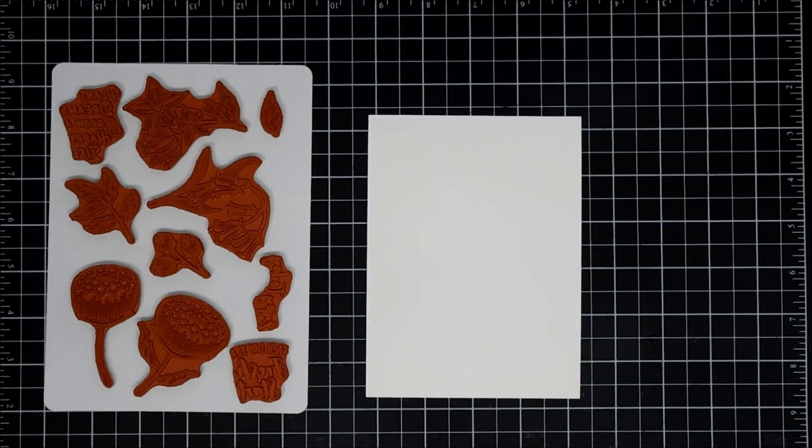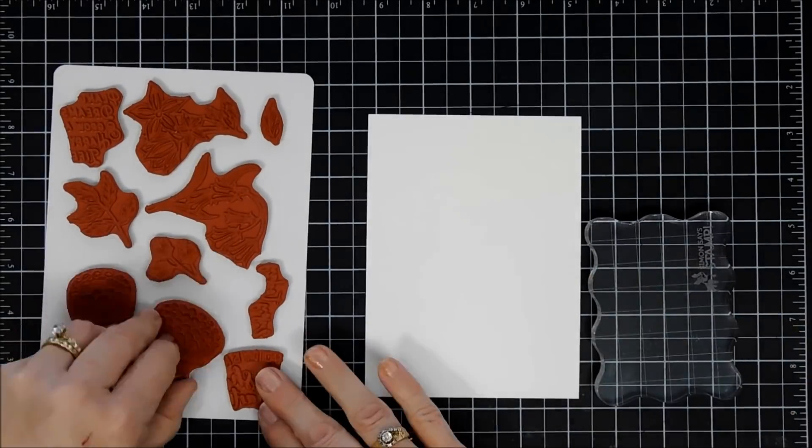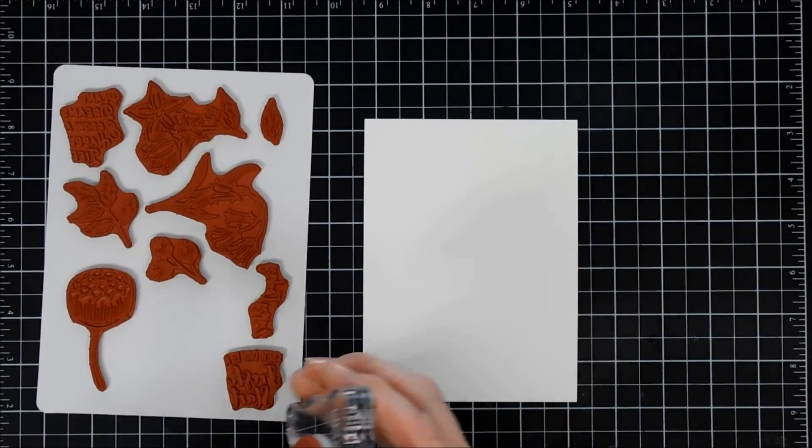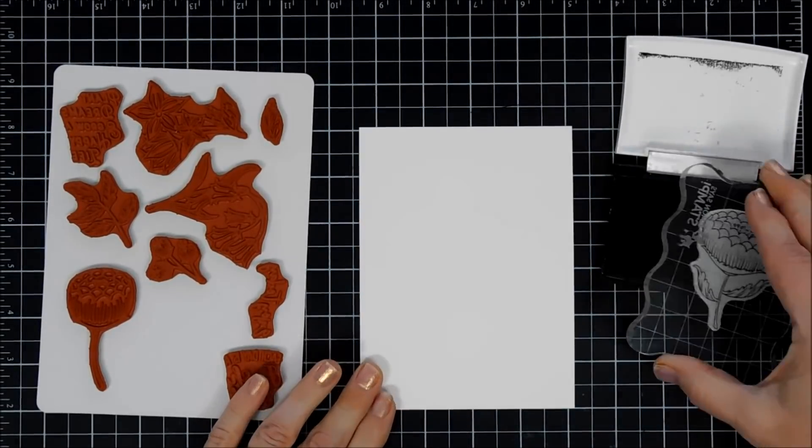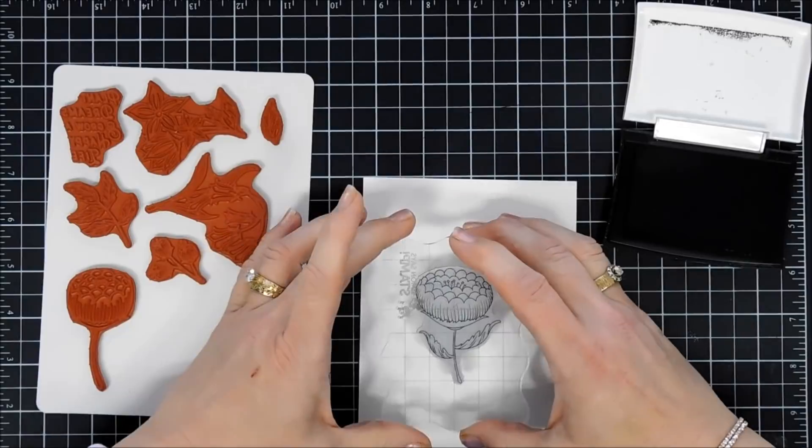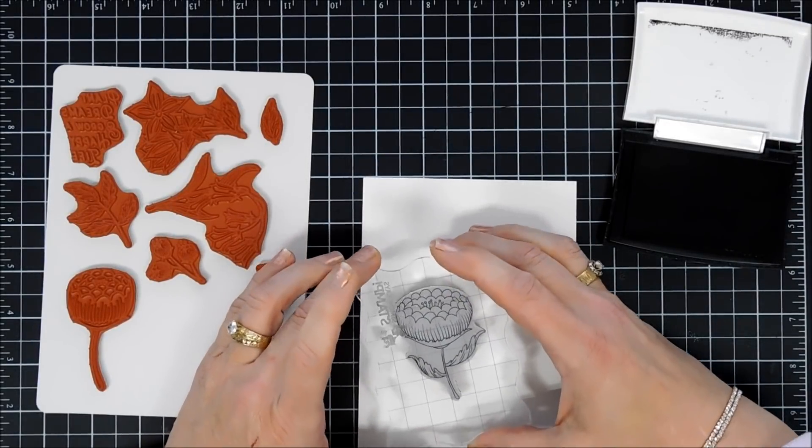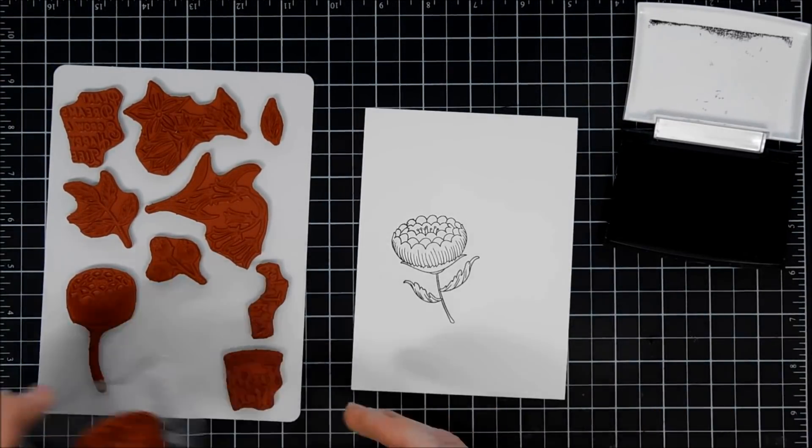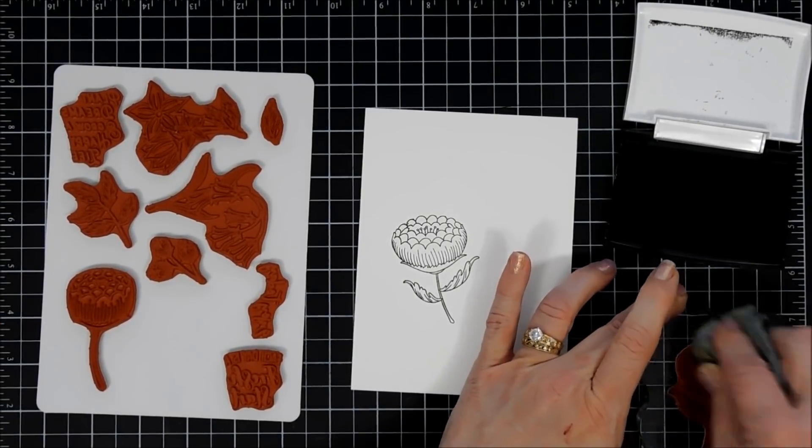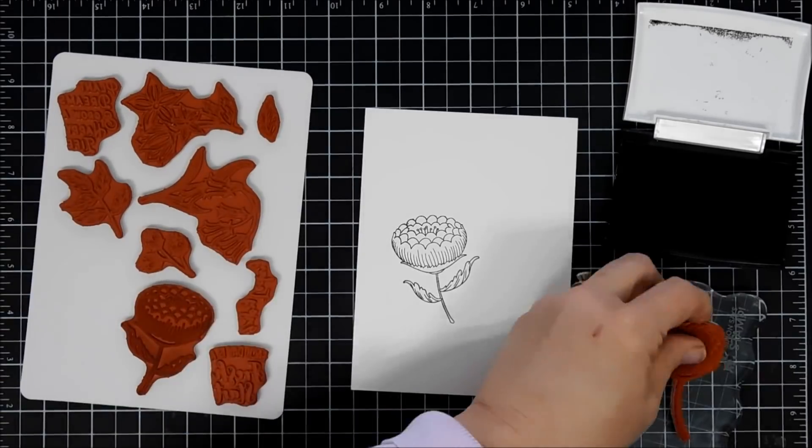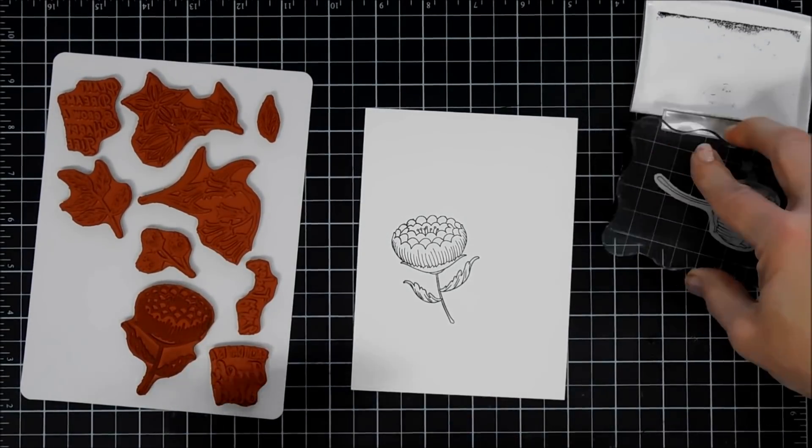We're going to make an elegant card, and I wanted to use some watercolors today, so I'm stamping on some Canson XL Watercolor Cardstock. I'm inking up the two largest floral images with VersaFine Onyx Black ink. We're just going to stamp one image, and then we'll clean it off, and then grab that second flower that coordinates with the first.